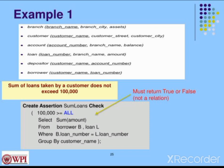This is a bank-related table set including customer, branch name, borrowers, and depositors. We will create an assertion. The assertion name is 'sum_loans'. We use CREATE ASSERTION with the assertion name, then CHECK with the condition.